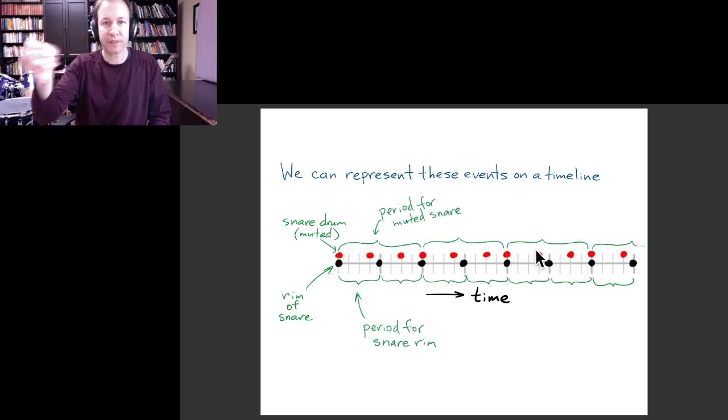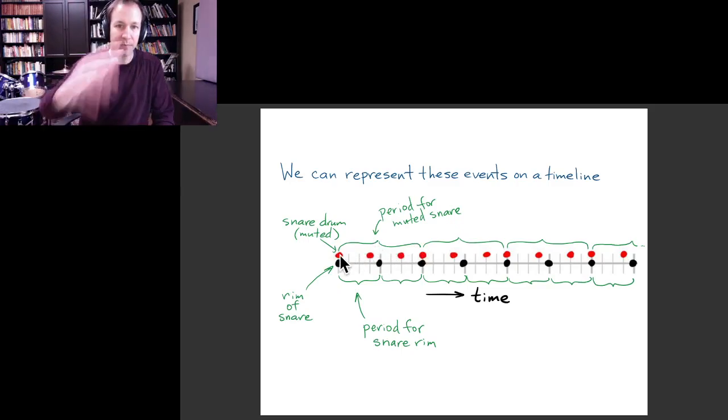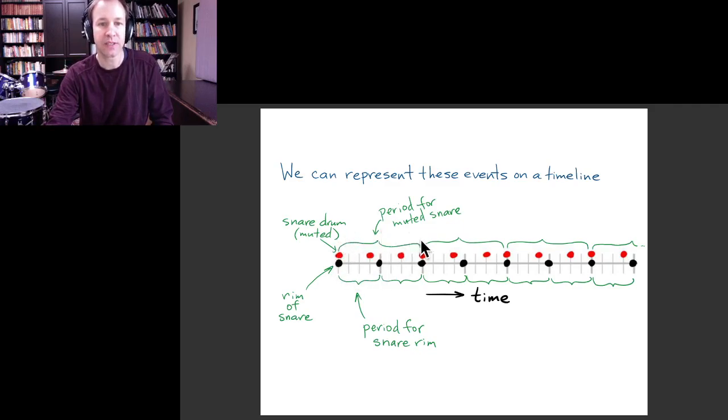In terms of our specific quantitative measures for periodic events, then we can say that we could talk about if we had some specific time markings on this timeline. So we could mark off the time in seconds, and then you would just look at the distance between two repeating events and that would be the period. And similarly, if you wanted to know the period for hitting the main part of this muted snare drum, that would be the distance between this and this, which is the amount of time before the whole thing repeats again.